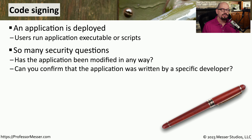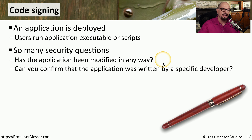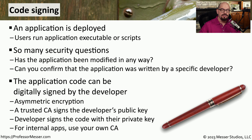Code signing answers a number of questions for us. First, has the application been changed in any way since the time that it left the developer? And secondly, is this application that we're installing really originating from that developer? To answer these questions, the developer simply needs to digitally sign the code itself and send that digitally signed code to the end users to install.